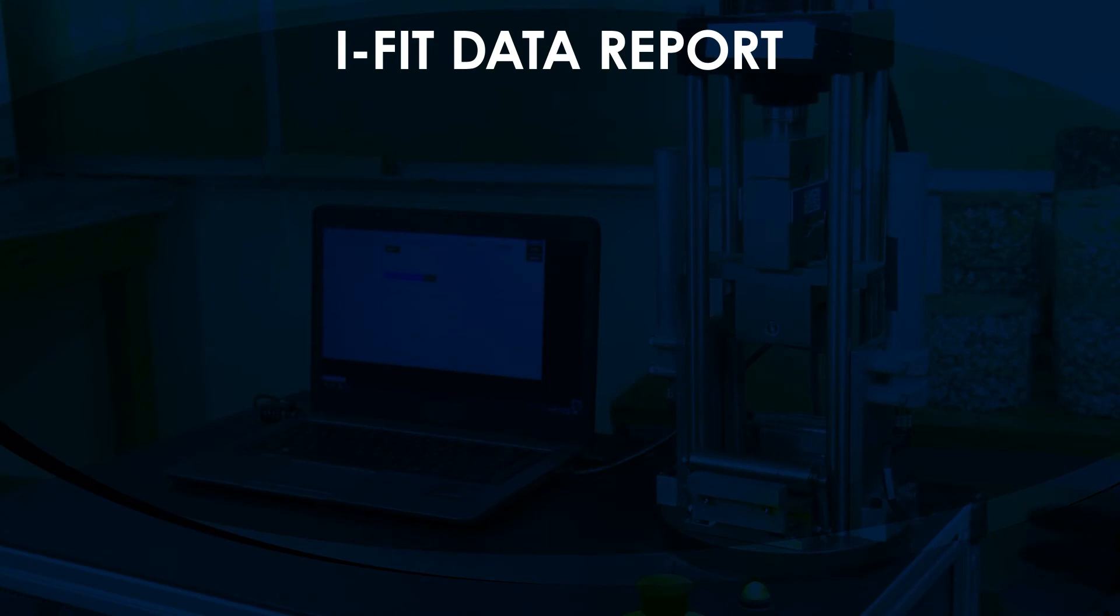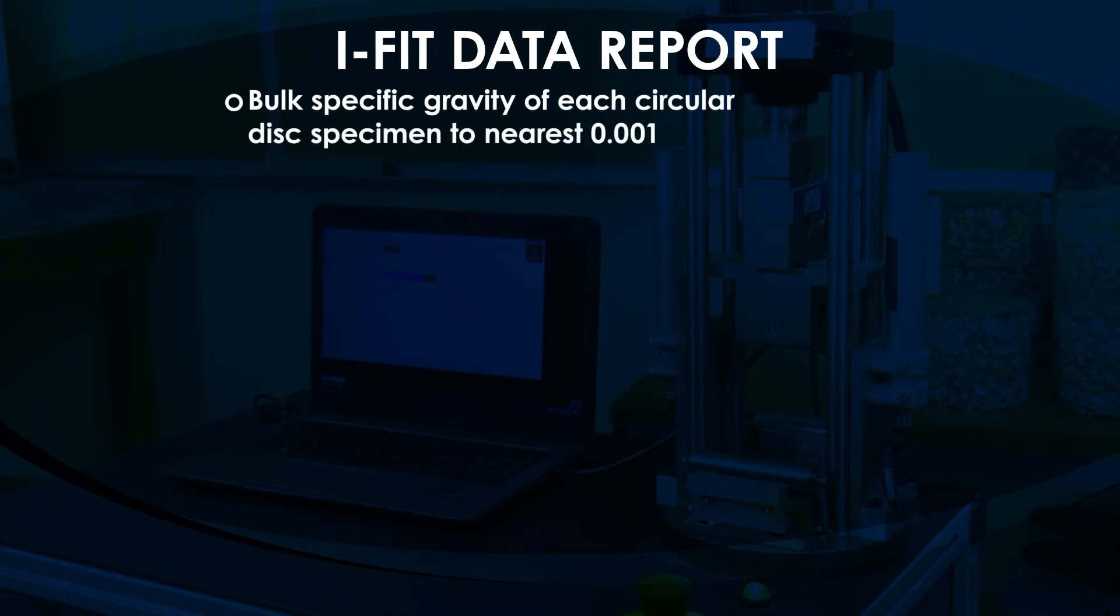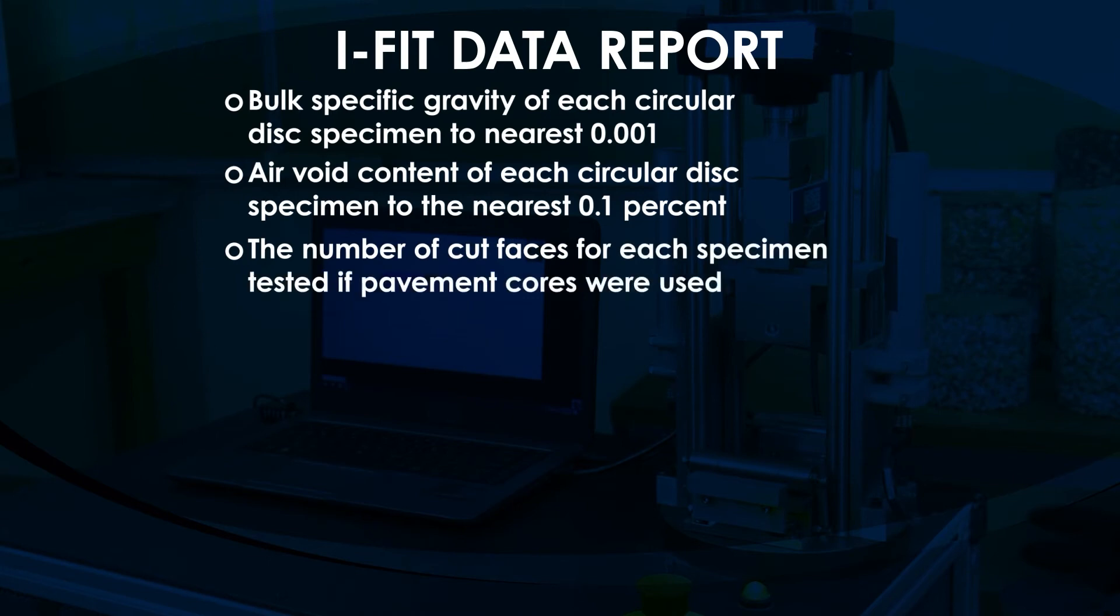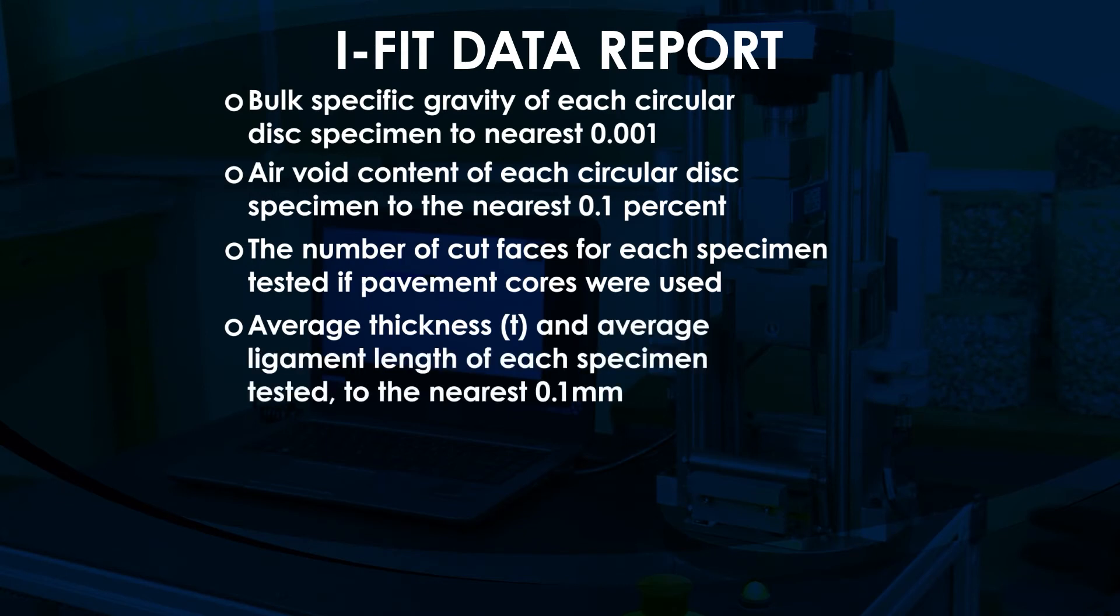An IFIT test data report may include the following parameters: bulk specific gravity of each circular disk specimen to the nearest thousandth, air void content of each circular disk specimen to the nearest 0.1 percent, the number of cut faces for each specimen tested if pavement cores were used, average thickness and average ligament length of each specimen tested to the nearest 0.1 millimeters, and initial notch length to the nearest 0.5 millimeters.